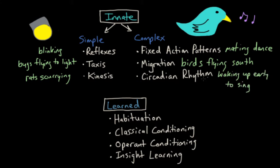So these are the most common innate behaviors. A learned behavior is a behavior that's acquired through experience. The most common types of learned behaviors are habituation, classical conditioning, operant conditioning, and insight learning.